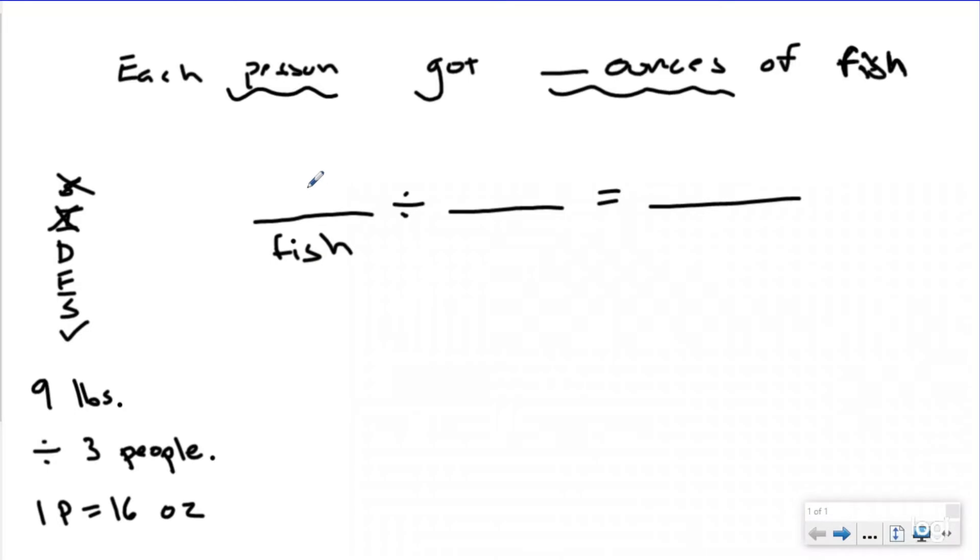So I know that the fish were being split up by the three people, which means the fish is what is being divided. If you did three people divided by nine pounds, that wouldn't make any sense. Although I guess piranhas eat people, you're not really going to assume that you're going to have a math problem about people being divided into fish. That wouldn't make any sense. We're not inhumane here, but we're going to be doing fish into people.